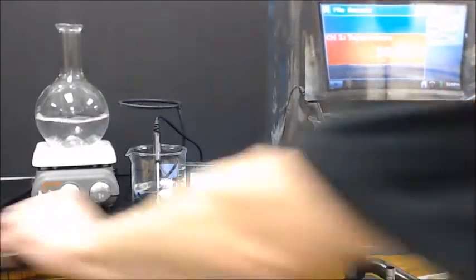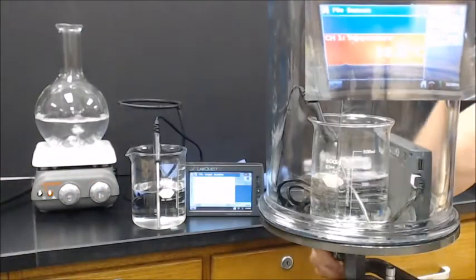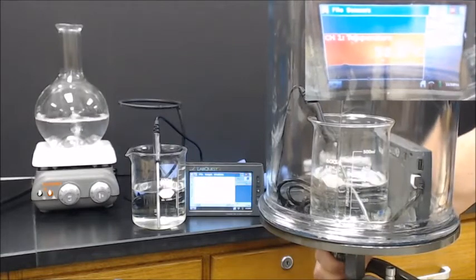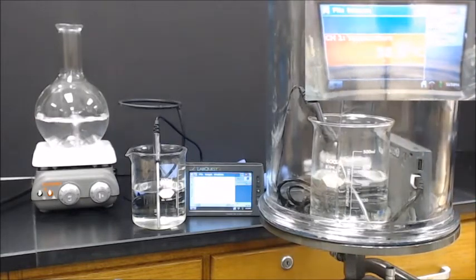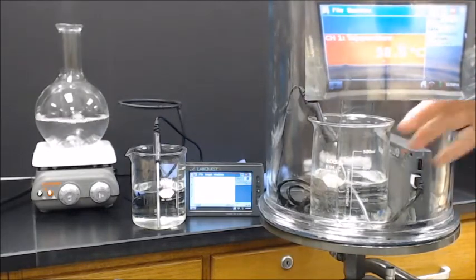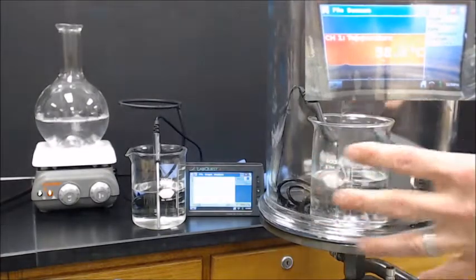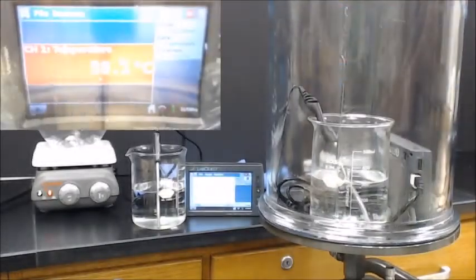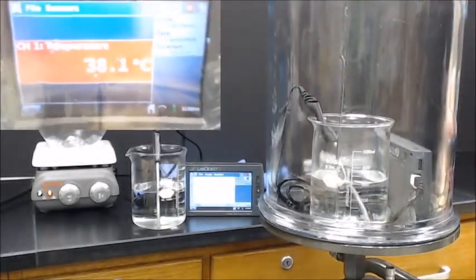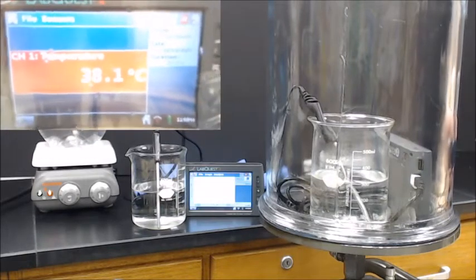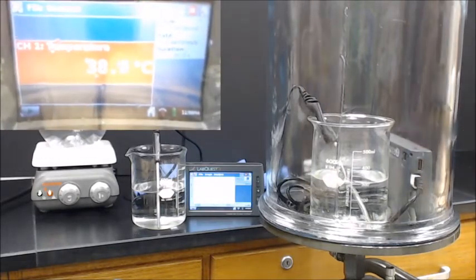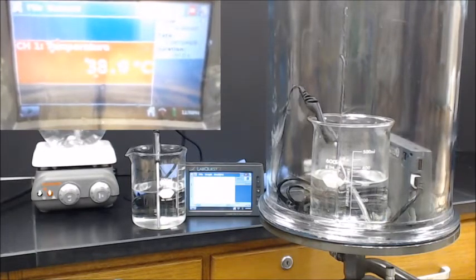I'm going to close the valve underneath here. Turn this on, and so as the vacuum pump operates, it is removing air from this chamber here. The distortion's pretty bad there, but I can't do anything about that. That's the less than perfect optical quality of our bell jar.